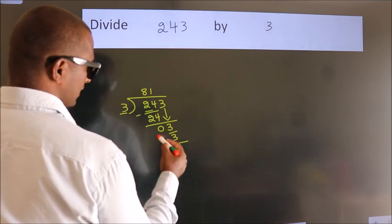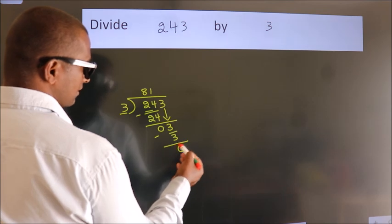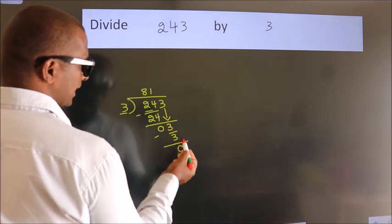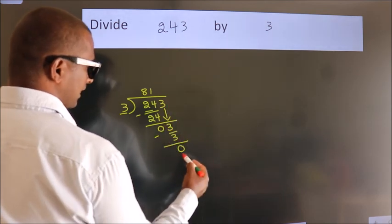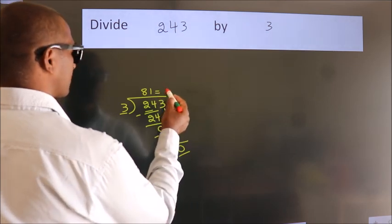Now we subtract. We get 0. After this, no more numbers to bring it down. And we got remainder 0. So this is our quotient.